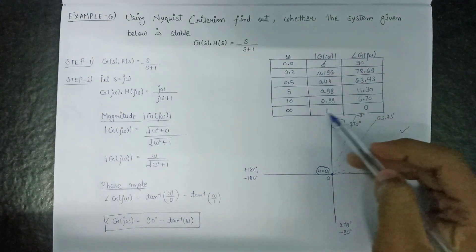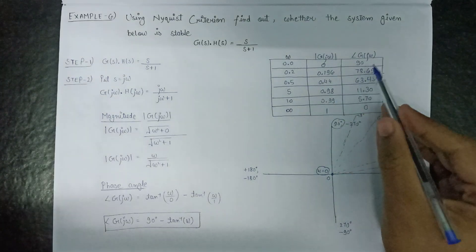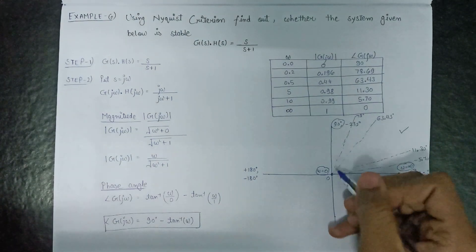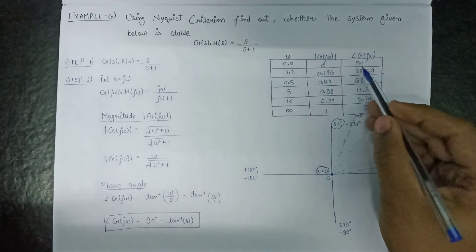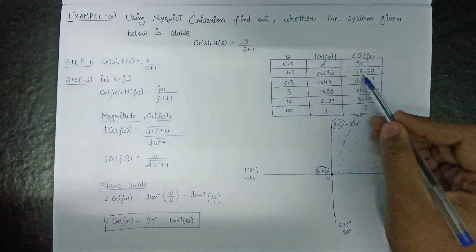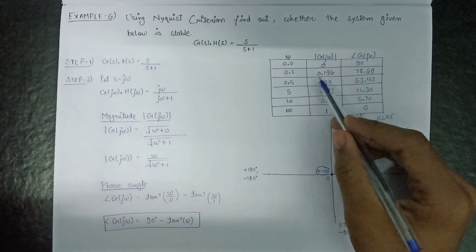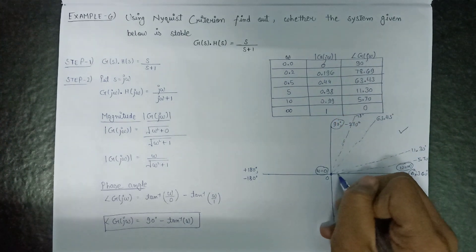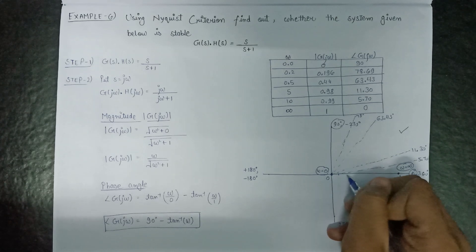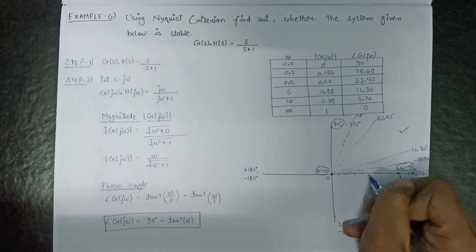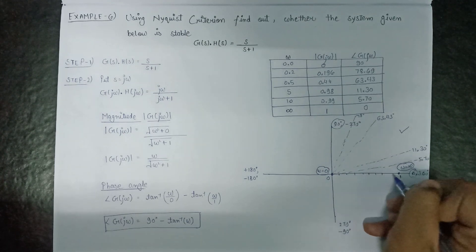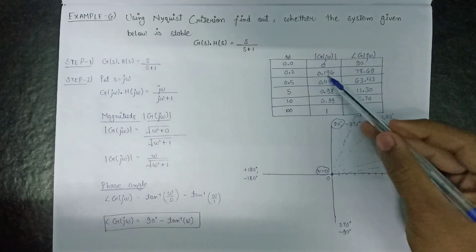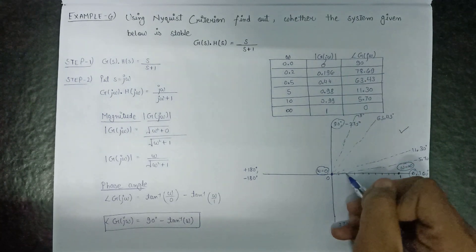Now let us plot all the magnitudes onto these angles. At 90 degrees the magnitude is 0. At 78.69 degrees the magnitude is 0.196. The scale shows 0.1, 0.2, 0.3, 0.4, 0.5, 0.6, 0.7, 0.8, and 0.9. Since we need to plot 0.196, it will be somewhere around 0.2.